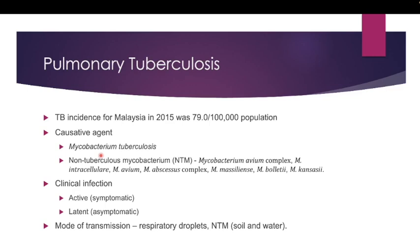Tuberculosis is one of the most common communicable diseases in Sabah and is a major public health concern. The incidence for Malaysia in 2015 was 79 per 100,000 population. The most common causative agent is Mycobacterium tuberculosis, and it can also be caused by non-tuberculous mycobacteria.